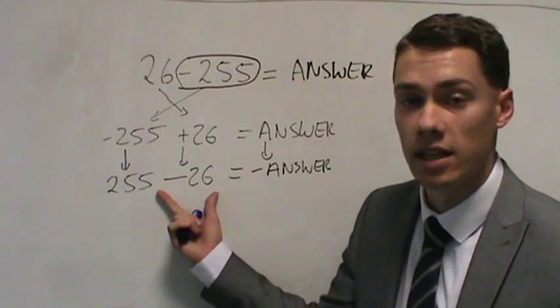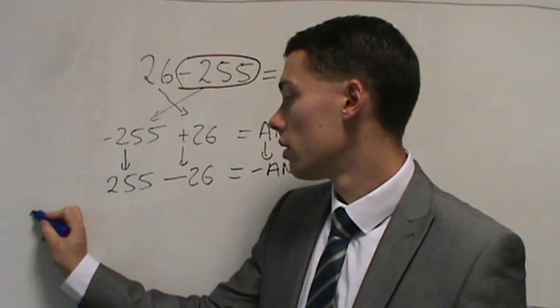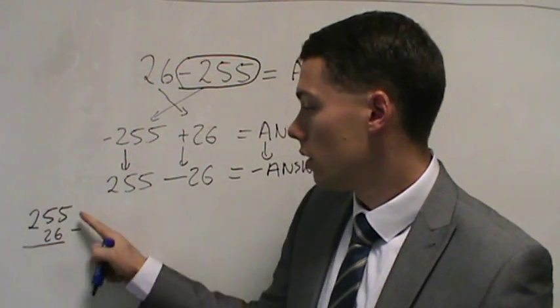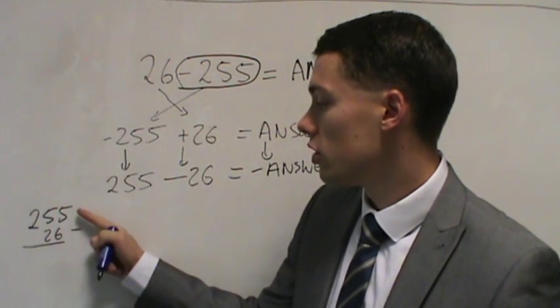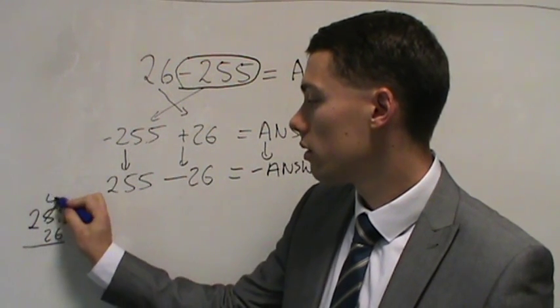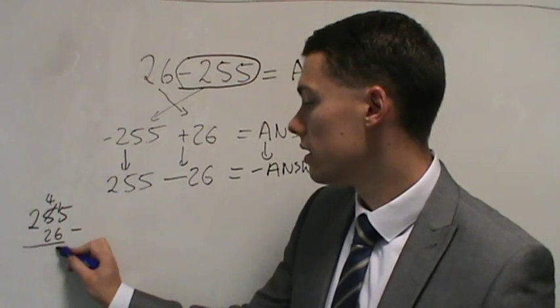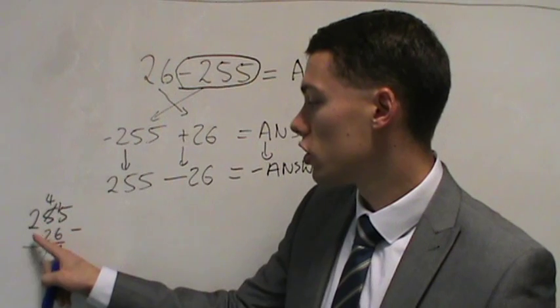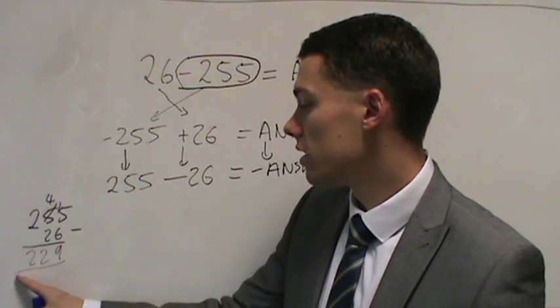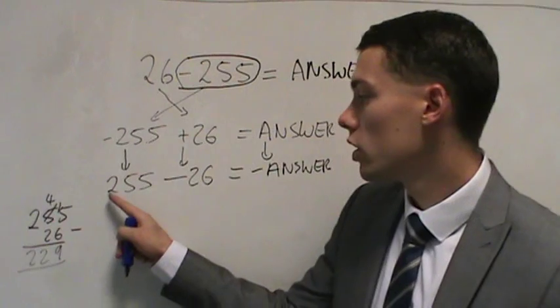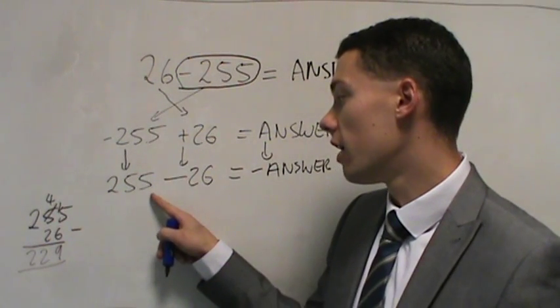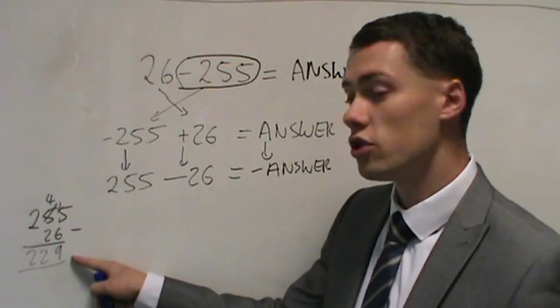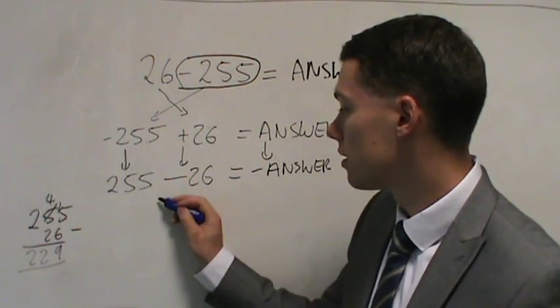So now we have the much easier question of 255 minus 26, which we can do over here. Can't do 5 minus 6, so you go next door, borrow one. 15 minus 6 is 9, 4 minus 2 is 2, and 2 minus nothing is 2. So that is 229. 255 minus 26 gives us 229. So I can write that below.